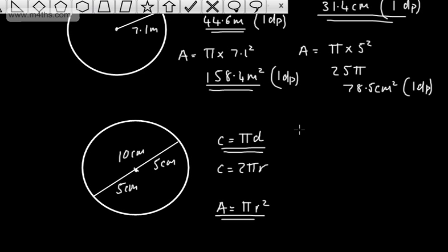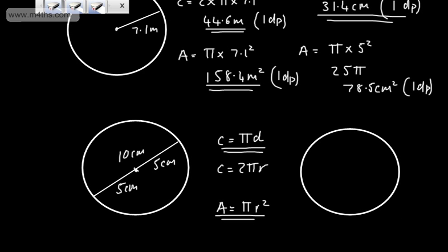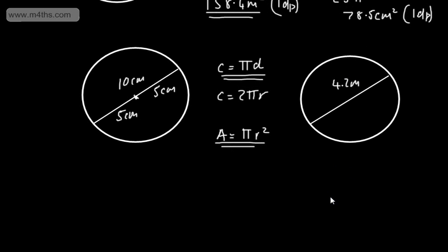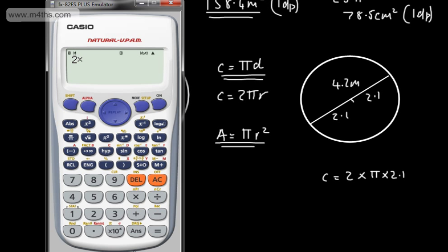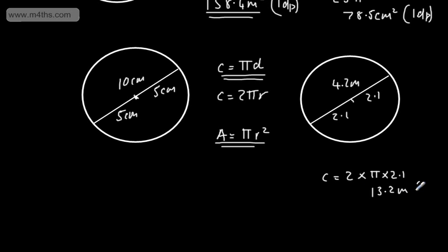Let's do an example with a diameter. Say the diameter is 4.2 metres. For the circumference, we can write pi times the diameter, or use a radius of 2.1. The circumference is 2 × π × 2.1 — or equivalently 4.2 × π. In the calculator, 2 × π × 2.1 gives 13.2. So the circumference is 13.2 metres, to one decimal place.